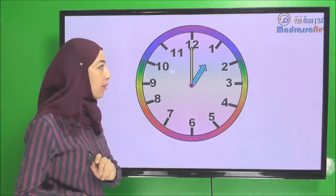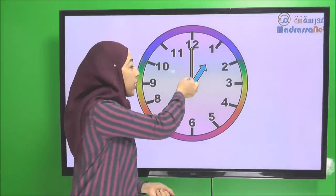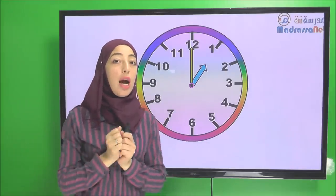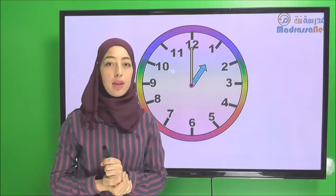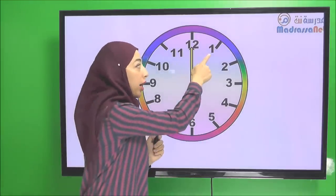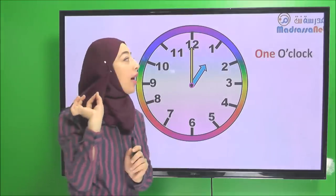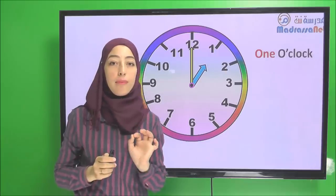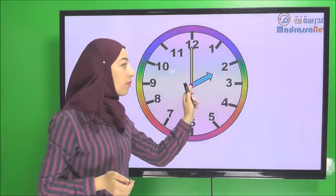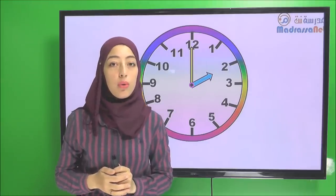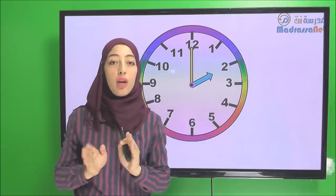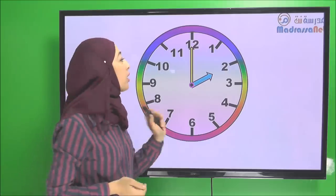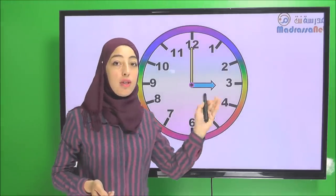Now this is our clock again. We will fix the minute's hand on twelve. And the hour hand is pointing to one. What time is it? It is one o'clock — exactly one. In English we say one o'clock. It's one o'clock. What if it's here? It's two o'clock. We say the hour then o'clock. The clock is pointing to two. It's two o'clock.